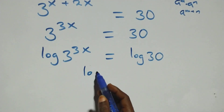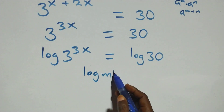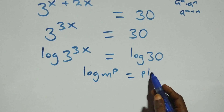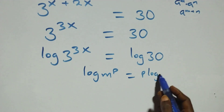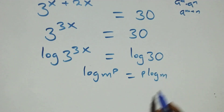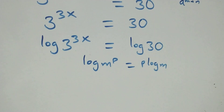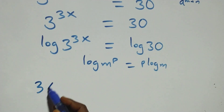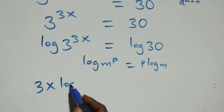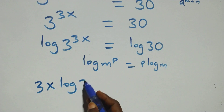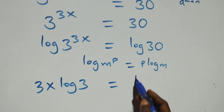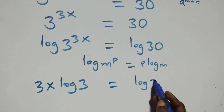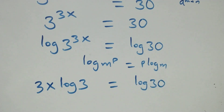Here we apply the power log rule, where we have log m raised to power p — this is the same thing as p log m. So all we have becomes 3x log 3 equals log 30 on this side.